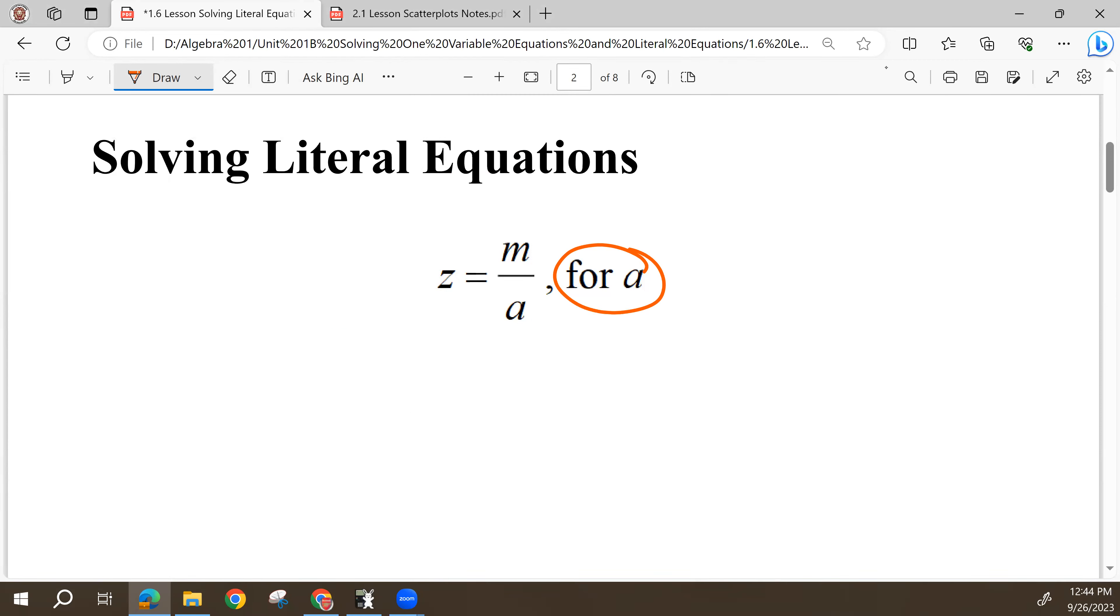And so we're going to do the same thing we would do if we were trying to solve an equation for X, and X was the only letter, but we had numbers in it. So we want to get A by itself, and so we need to move it to a side where it's all by itself and move everything else to the other side of the equal sign. And so we can do that by moving things and doing opposite operations.